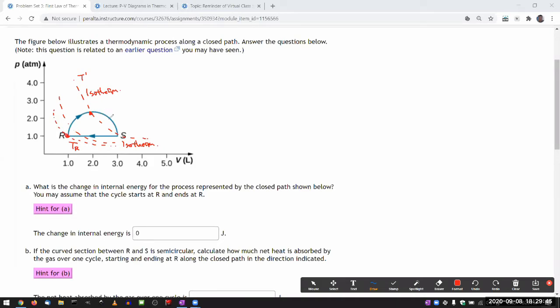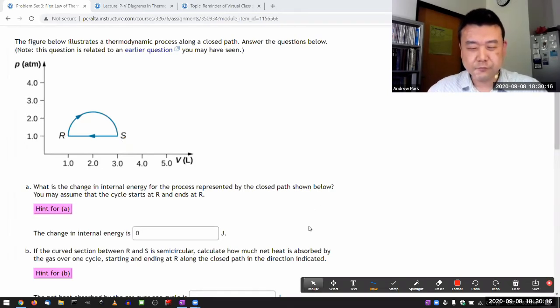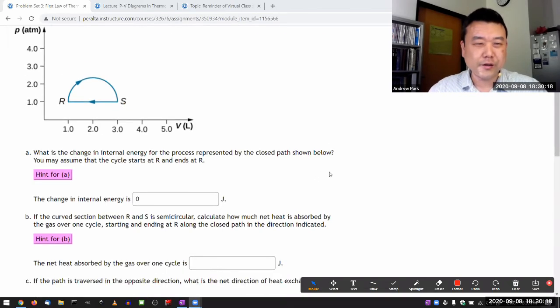After the gas completes this cycle, it comes back to this temperature. The internal energy of a gas is directly related to its temperature, the degree of freedom over 2 and kBT. So if the temperature didn't change, then internal energy didn't change. So change in internal energy is zero. It's once again one of those questions that masquerade as a quantitative question, but are actually conceptual.